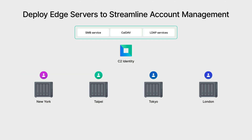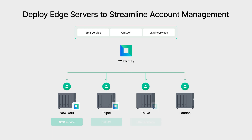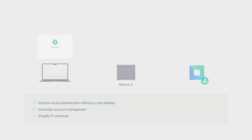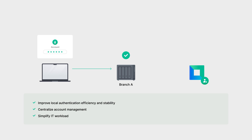With C2 Identity, branch offices can set up an Edge server on their local NAS. This allows user and group data to sync from the centralized C2 Identity directory to Edge servers, so all accounts are managed in one unified system. Local authentication through Edge servers means no more relying on the central server for every login, reducing delays and avoiding bottlenecks — resulting in faster, smoother access for everyone at the branch.